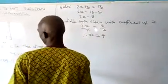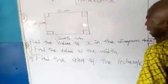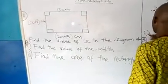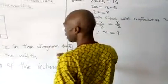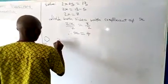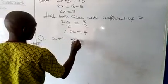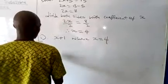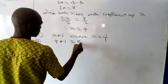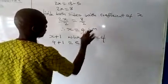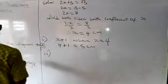If x equals 4, then question number 2, part B, says find the value of the width. Now, for us to find the value of the width, we are told that x plus 1 is the value of the width, where x equals 4. Therefore, the width is 4 plus 1, which is 5 cm. Remember we are working in cm. The unit of this one also is cm. The value of the width is 4 plus 1, which is 5 cm.